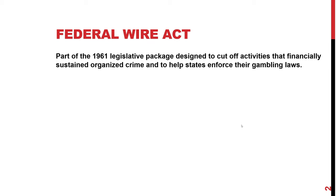The world in 1961 was substantially different than it is today. In addition to the Red Scare, there was the specter of organized crime that was going to destroy America. The Kennedy administration made it a high priority to go after organized crime, and the Federal Wire Act is one of those statutes designed to do that.